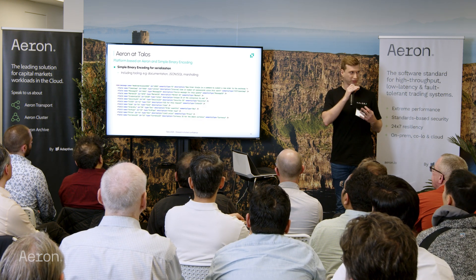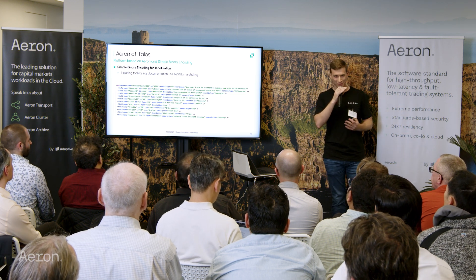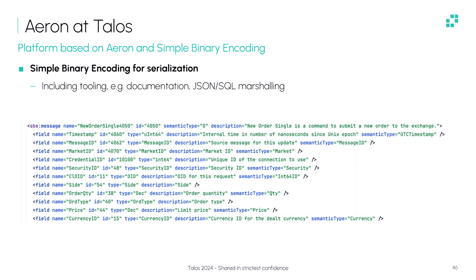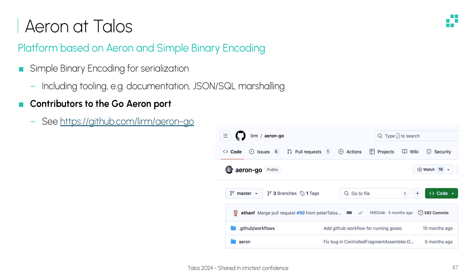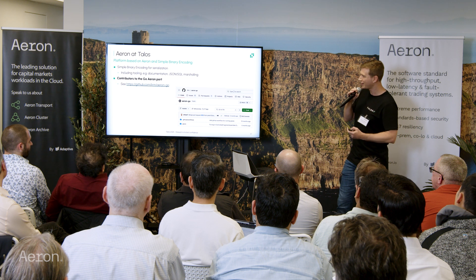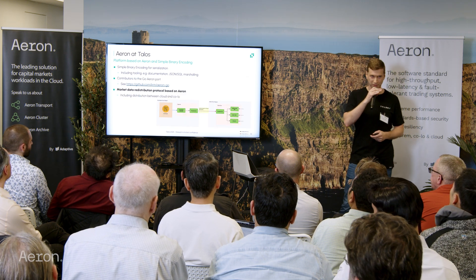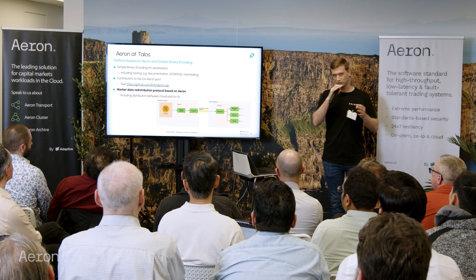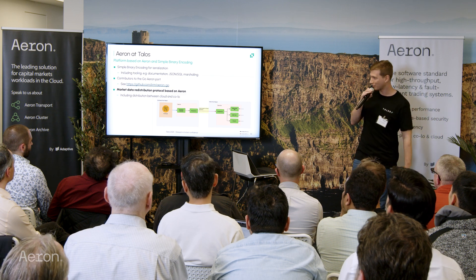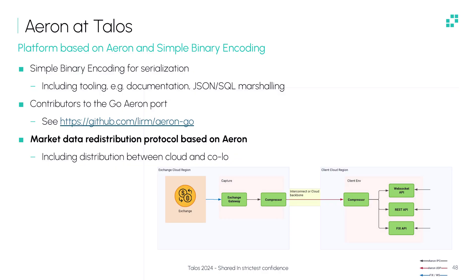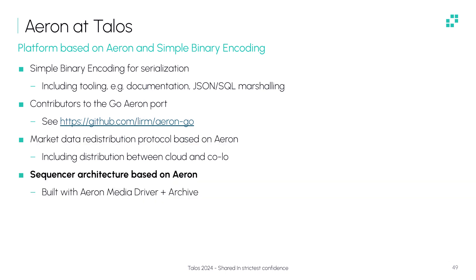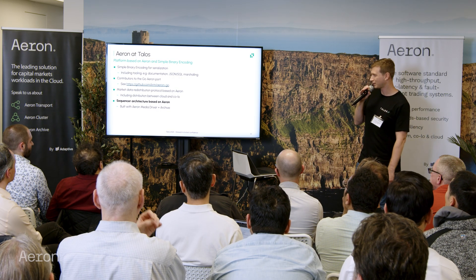A lot of Talos is built on what I'd call Aeron-adjacent technologies. We use Aeron as our main messaging transport and SBE as our encoding, with a lot of tooling built around this. We are big contributors to the Aeron Go port — we must be the biggest users out there. We have a market data redistribution protocol built on top of Aeron: we connect to exchanges right next to them, normalize the data, and use Aeron to ship it across regions — sometimes colo to cloud, sometimes between cloud regions. And the final thing we build on Aeron is a sequencer architecture.